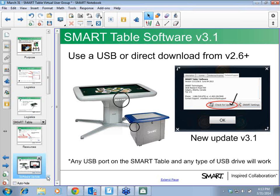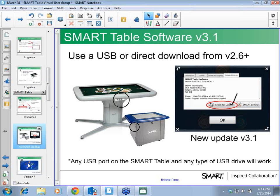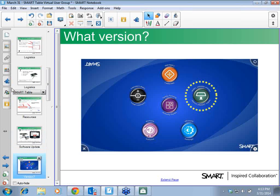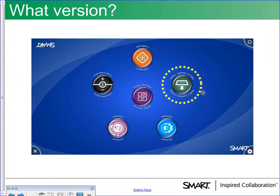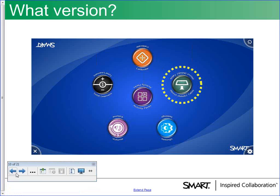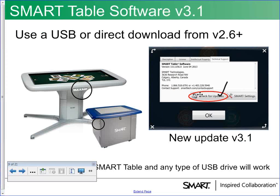If you have questions as I go along, please stop me. You can always tell which version of the toolkit you have by going to teacher mode and selecting the Smart Table icon — it'll tell you the version and whether there's an update. Anything higher than version 2.6 gives you the 'check for updates' option. If it's lower, you have an older version and it would be beneficial to update.